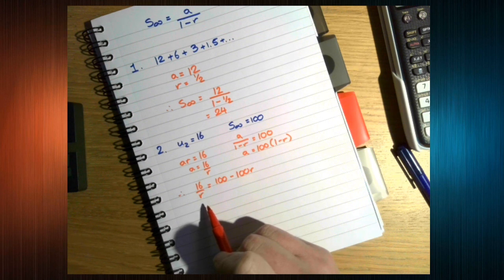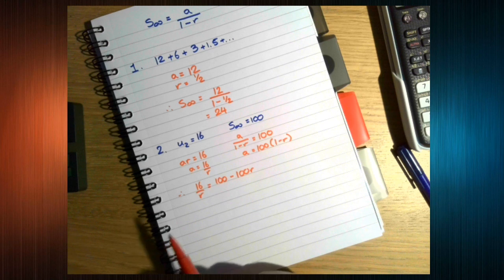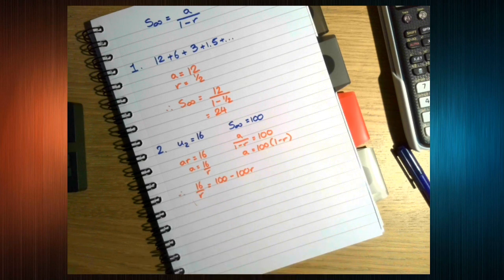We need to find r, and let's have a look at the question. The question says, find the two possible values of the common ratio. Which tells us, oh, we need to rearrange this to look like a quadratic.